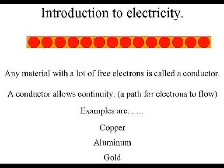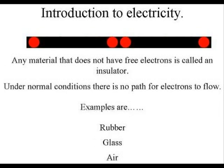These conductors allow what's called continuity, or a path, for these electrons to move in. The opposite of a good conductor is an insulator. An insulator is any material that does not have a good path, or it doesn't conduct the flow of electrons real well. They do not have a lot of free electrons present to allow that flow.